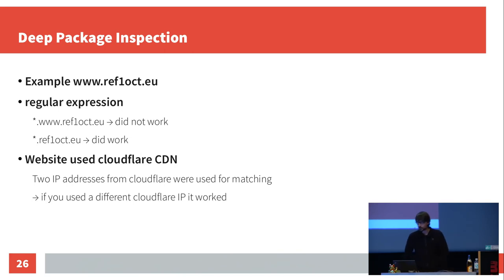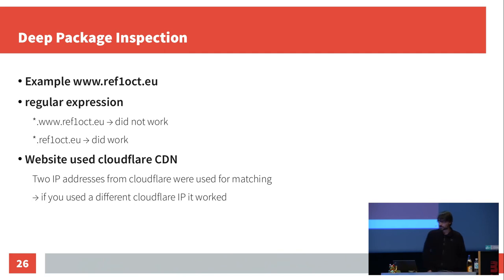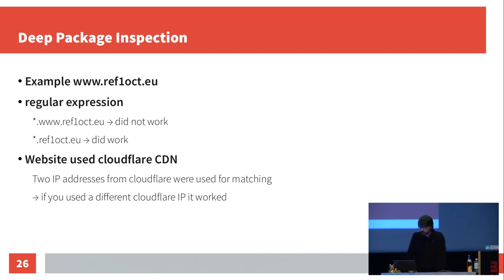This website used Cloudflare CDN, and there were two IP addresses resolved by the DNS system. The IPs used for blocking were these two IPs, and if you used a different IP from Cloudflare, you could actually see the homepage.